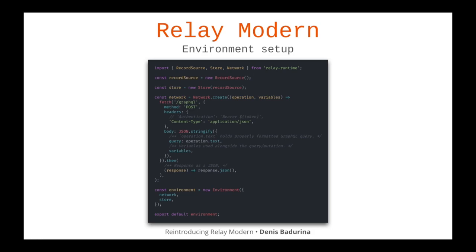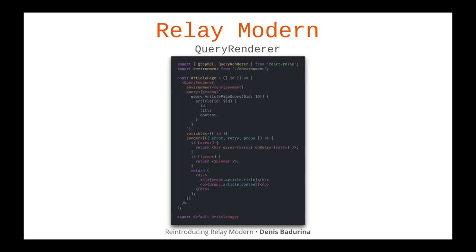This is the code showing the minimum needed to set up the environment for RelayModern. On the top, we create a record source, then put that inside the store. Then we make a network request optimized to fetch GraphQL queries — we provide the operation and the variables and use them to make a fetch request. Inside this fetch function you could put your authentication token, add subscriptions, or whatever you want. Then you combine the network with the store and get the environment.